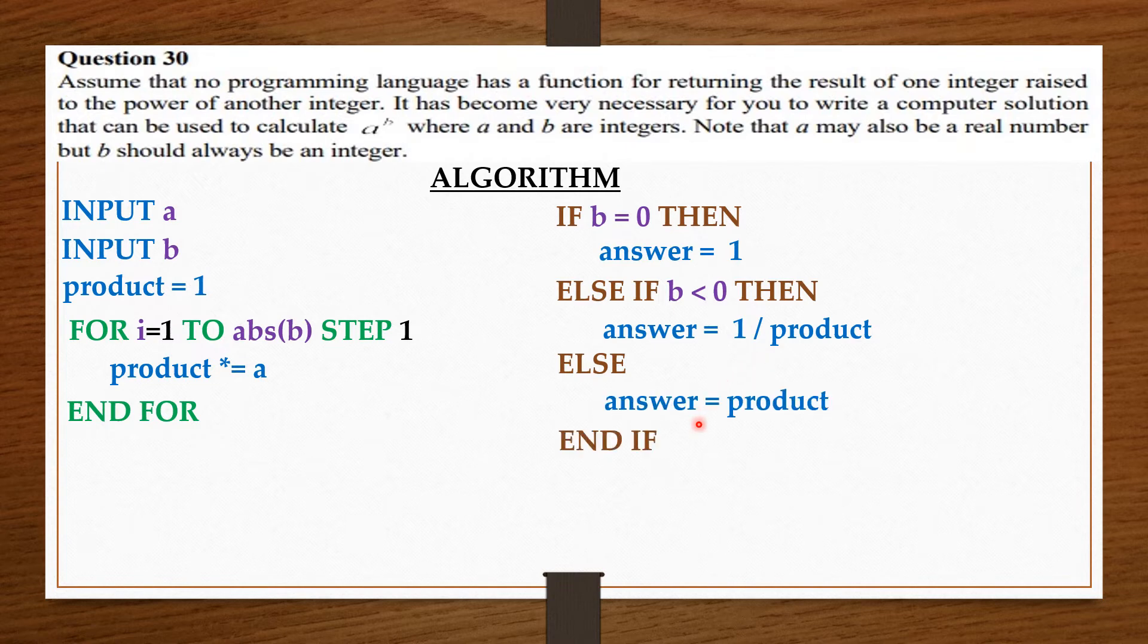Now, what this if statement means is that if b is 0, that is, we know that any non-zero number raised to the power 0 is 1. So, if the b part, which is the power or the exponent is 0, then you should print, then you should say that the answer equals 1.